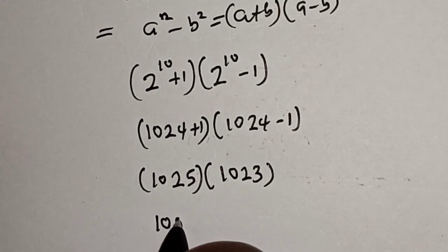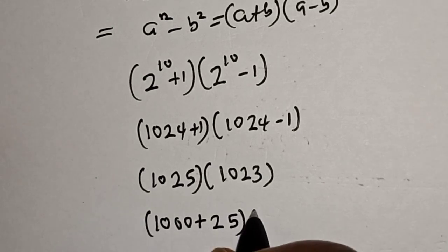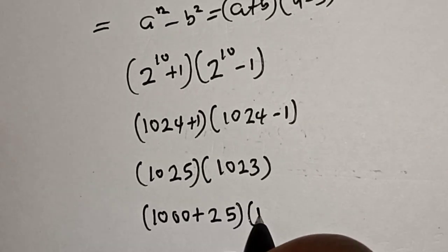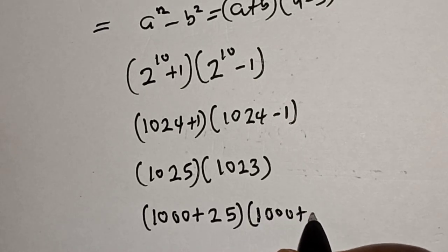1025 can be written as 1000 plus 25, multiplied by 1000 plus 23.